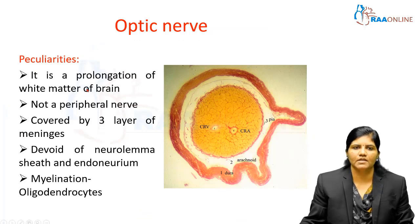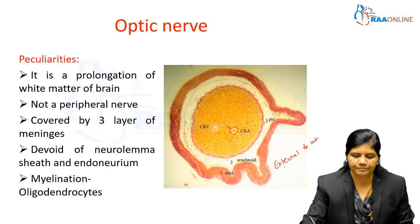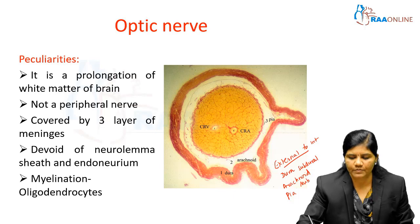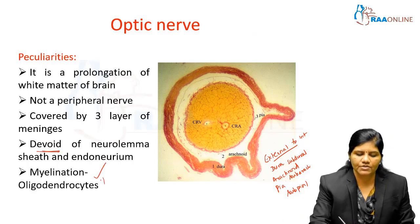The optic nerve has some peculiarities — it is not a peripheral nerve. It is a prolongation of the white matter of the brain, so it has all three coverings of the brain as well as the associated spaces. From outer to inner, the coverings are dura mater, arachnoid mater, and pia mater. In between these are the subdural space, subarachnoid space, and subpial space, all of which are prolonged over the optic nerve. It is also devoid of a neurolemma sheath and endoneurium, and myelination is performed by oligodendrocytes.